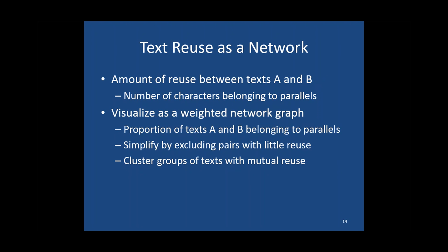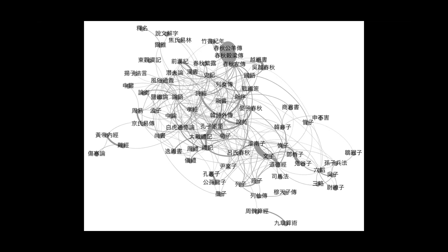The last thing I want to talk about, closely related to what we heard earlier, is text reuse as a network. Once we can look at text reuse between any two texts, this becomes a relational picture, and we can visualize it as a weighted network graph where the strength of connection between nodes is proportional to the amount of the two texts belonging to parallel groups. We can simplify the picture by excluding pairs with very little reuse and apply clustering — the visualizations were also made in Gephi. This is the network picture for the Pre-Qin and Han corpus, laid out entirely on the basis of relative strengths of parallels.